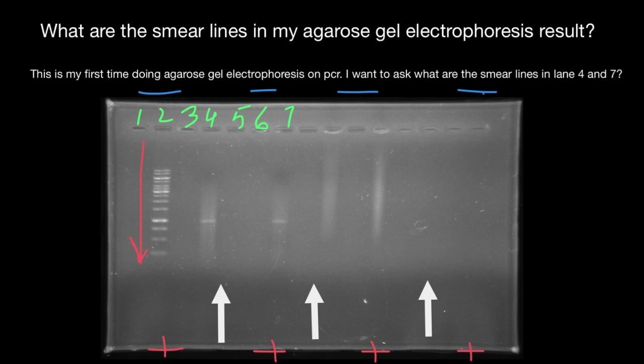As you see, above this band we see some smearing, which represents DNA or other contaminants of higher molecular weight than this band. We also see smearing below, which means molecules of smaller size and smaller molecular weight.